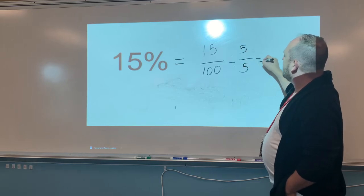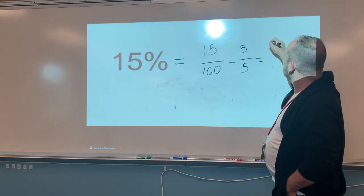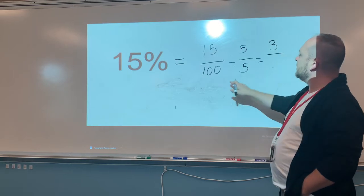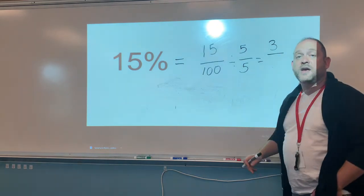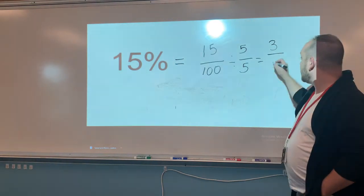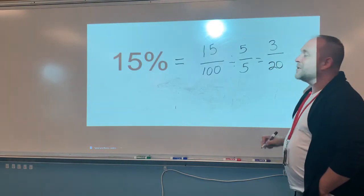So I have 5 and 5. 15 divided by 5 is 3. 3 times 5 is 15. And of course, 100 divided by 5, you guys should know this one off the top of your head by now. We've done it three times today so far - 20.